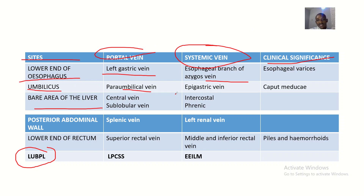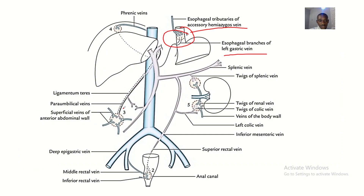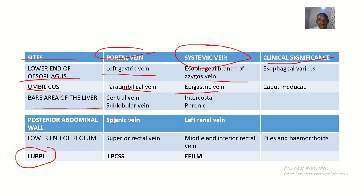At the umbilical region, the para-umbilical veins represent the portal contribution, and the epigastric vein represents the systemic contribution coming from below.